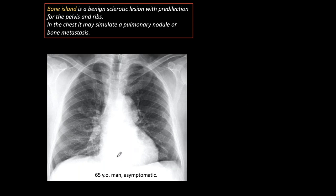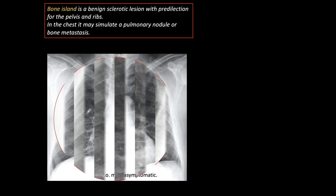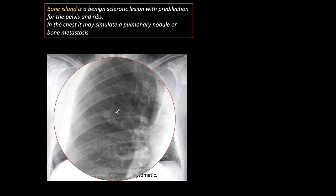Here we have the radiograph of a 65-year-old asymptomatic man. At first glance the chest appears normal, but if we look carefully we see a small nodule there, superimposed over one rib. In the coned-down view it doesn't look calcified and seems slightly irregular, so obviously a CT has to be done.